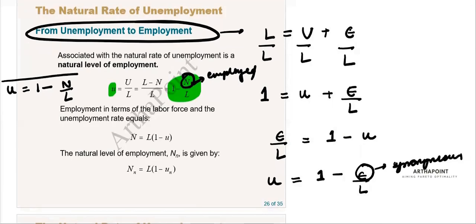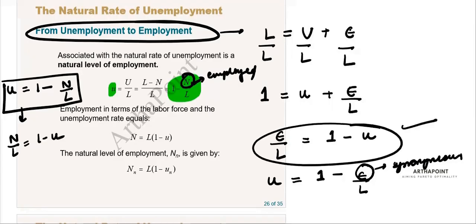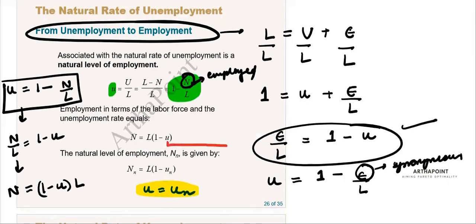So if u equals one minus n/L, then n/L equals one minus u, and from there n equals (one minus u) times L. Now when u equals u_n — meaning unemployment is at equilibrium — substituting u_n gives a value of n called n_n, the natural level of employment.